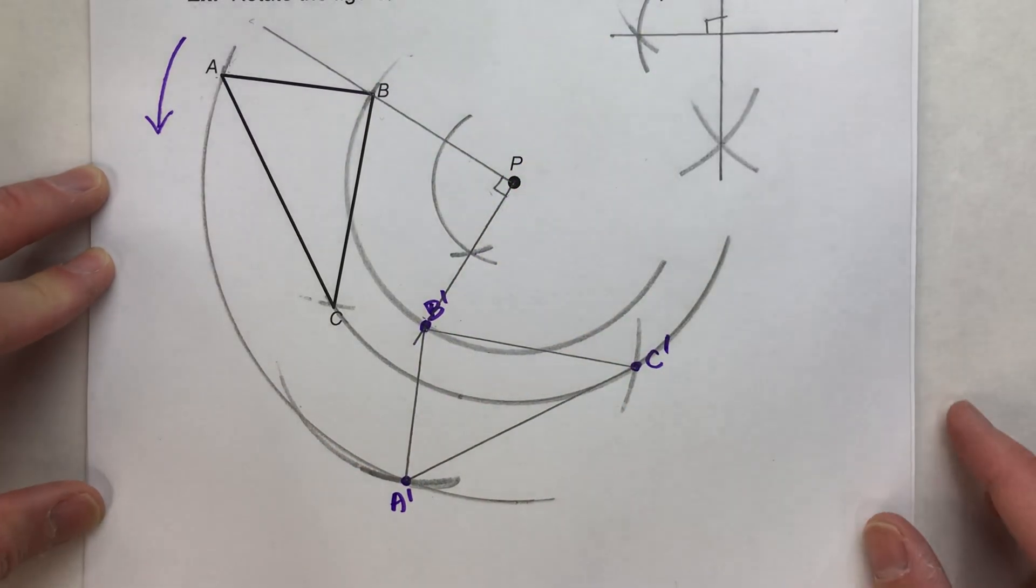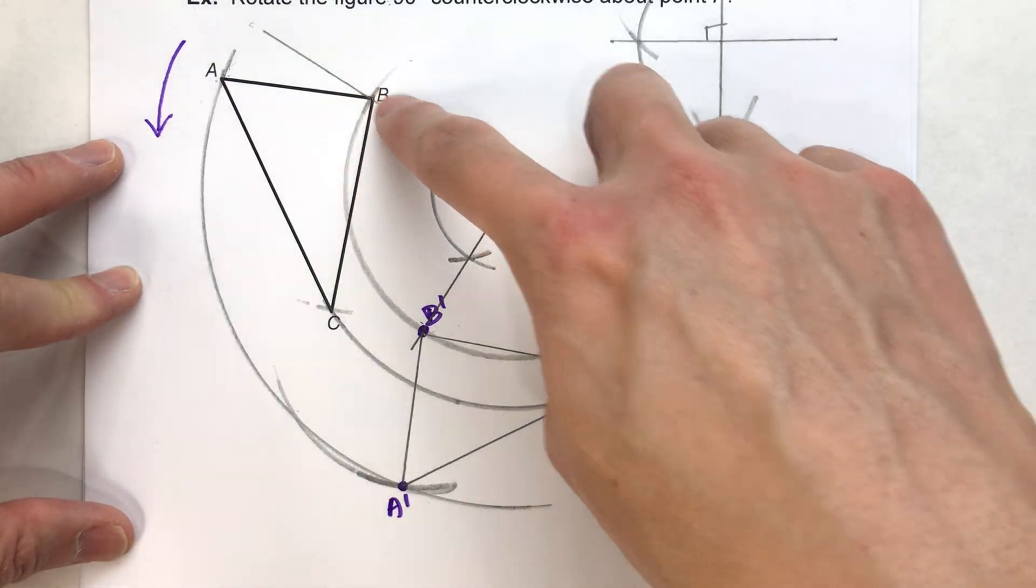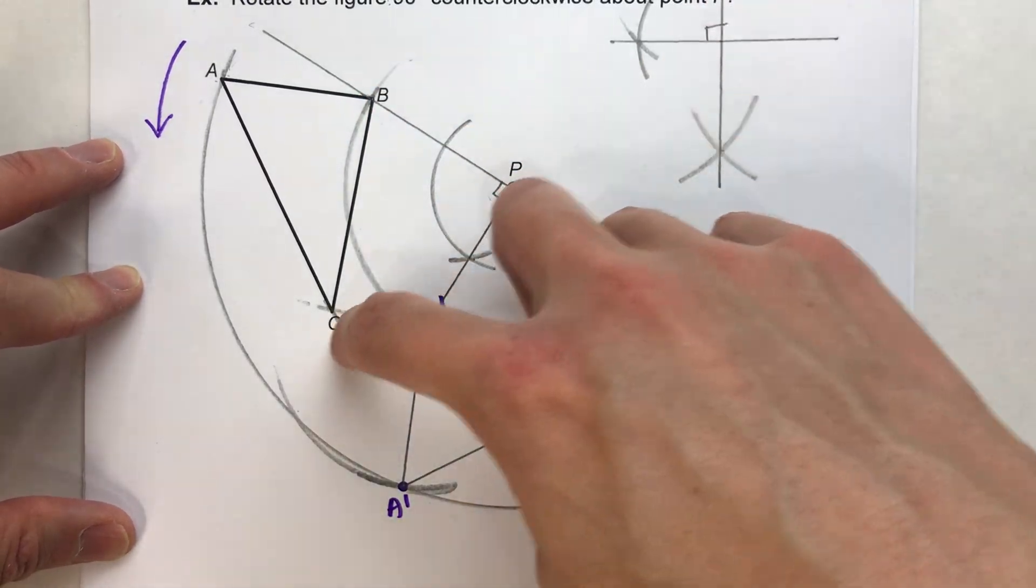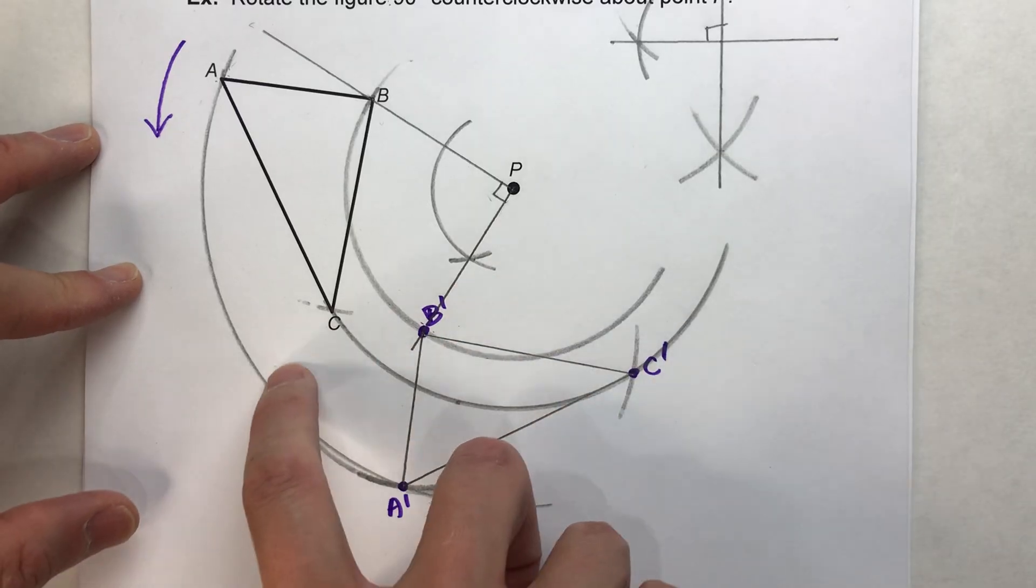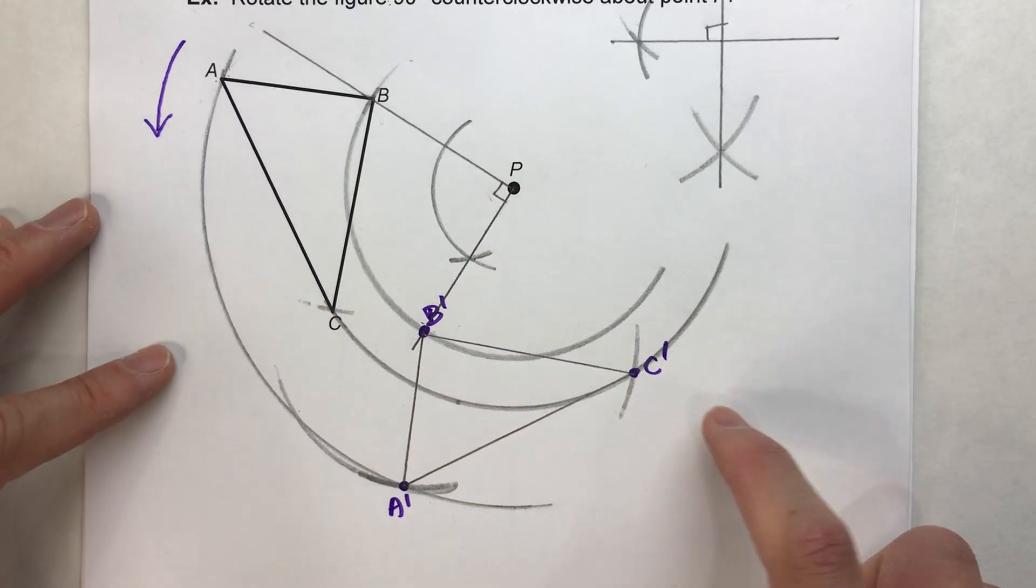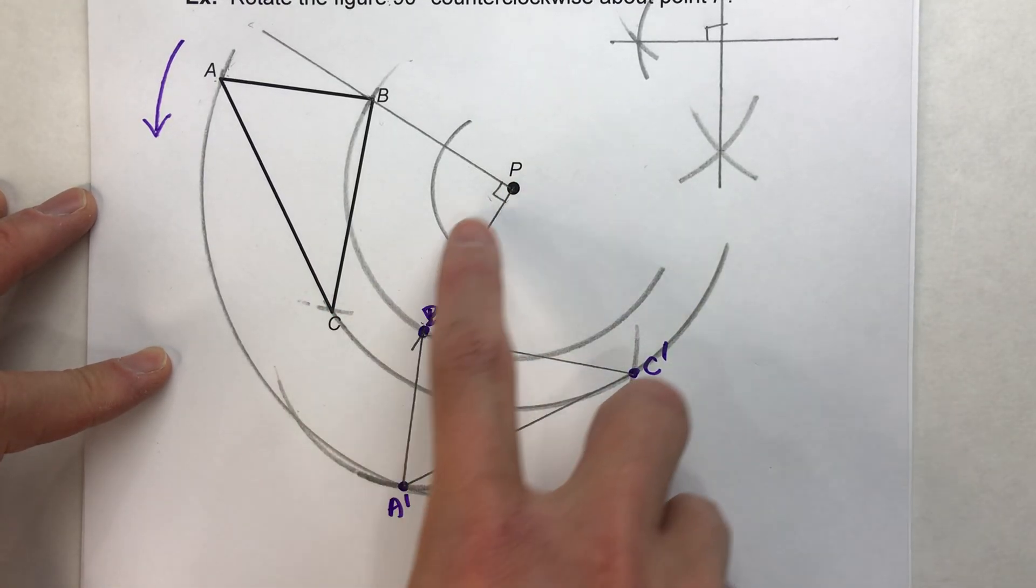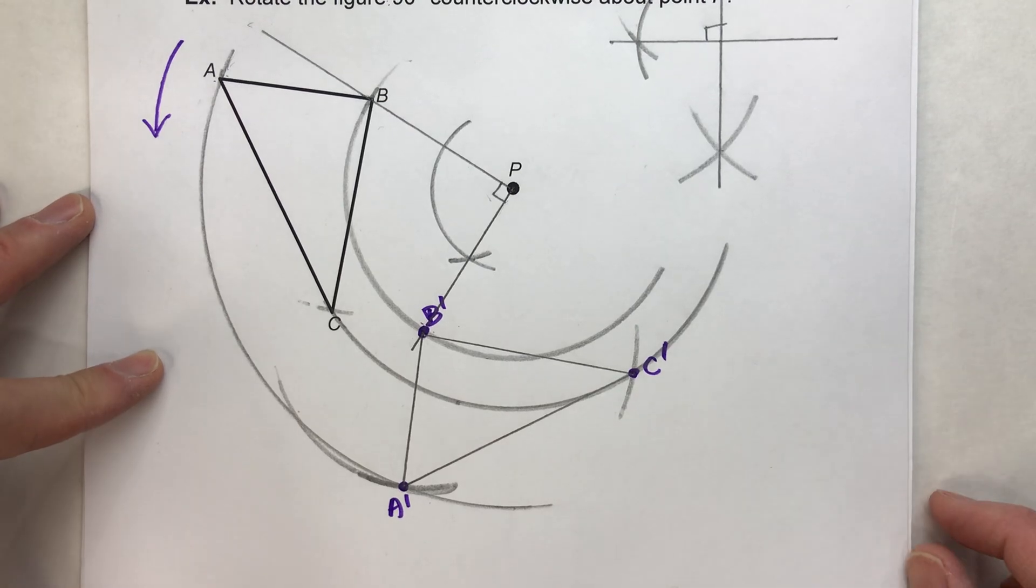So we've rotated that triangle 90 degrees. And again, if you want to just duplicate the right angle for all three vertices, it really wouldn't be that hard. You're only swinging, what, two arcs? It's just a lot faster by swinging one arc to find that other vertex.